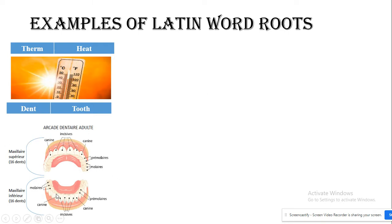Look here at the teeth — the mandible, the superior maxilla and inferior maxilla, which are the upper and lower jaw. We have different types of teeth: incisives (incisors/قواطع), canines (أنياب), and molars and pre-molars.